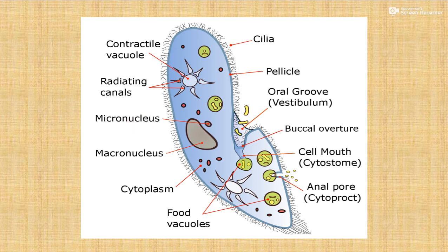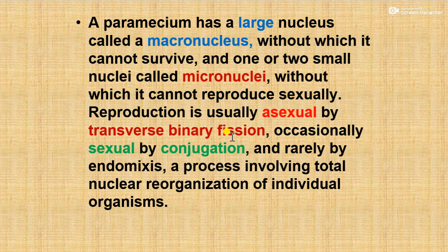Occasionally, reproduction is usually asexual by transverse binary fission and occasionally sexual by conjugation, and rarely by endomixis, a process involving total nuclear reorganization of individual organisms.